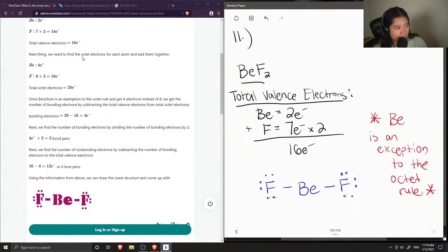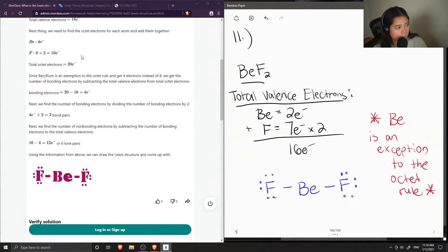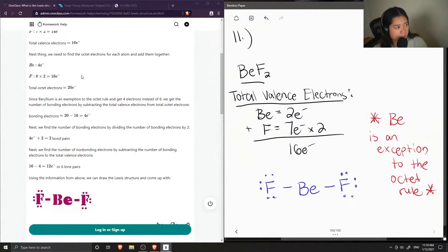Next, we need to find the octet electrons for each atom and add them together. And they got 20. And since beryllium is an exception to the octet rule and gets four electrons instead of eight...